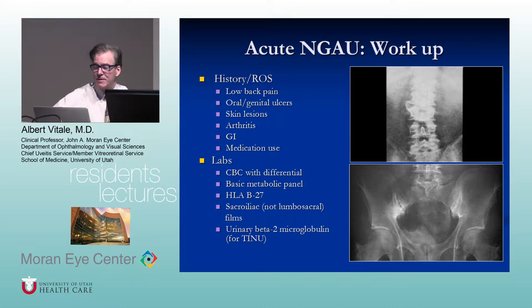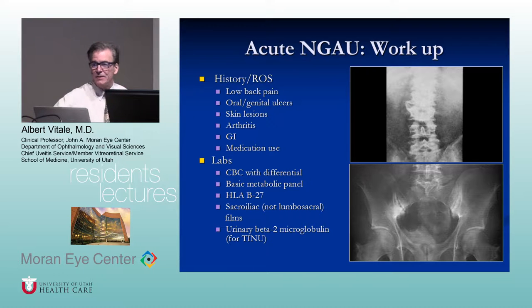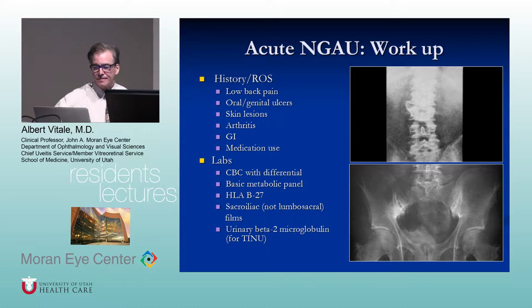The kind of history you want to get in a patient like this includes arthralgias, low back pain, oral and genital ulcers — many anterior uveitis conditions can give you oral and genital ulcers, not just Behcet's disease — as well as skin lesions, GI symptoms, and medication use.